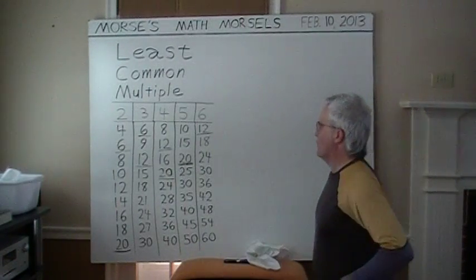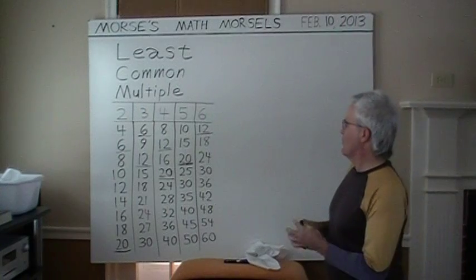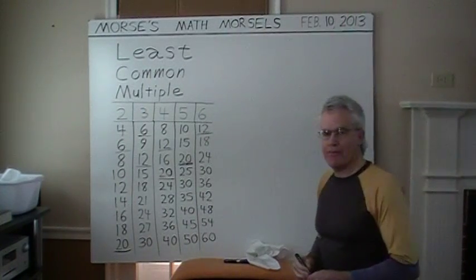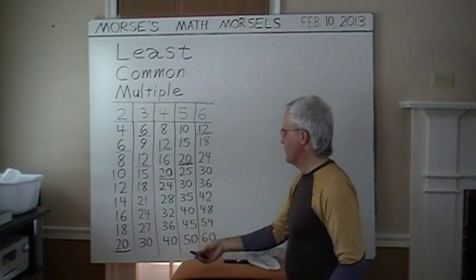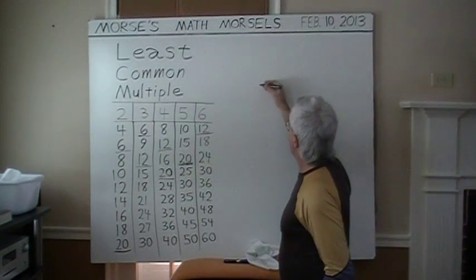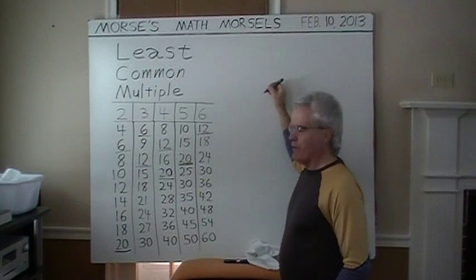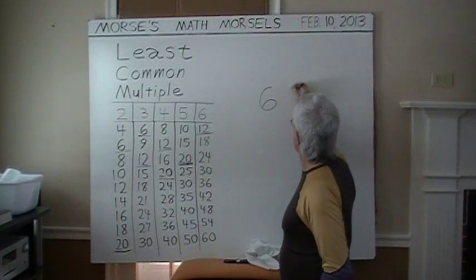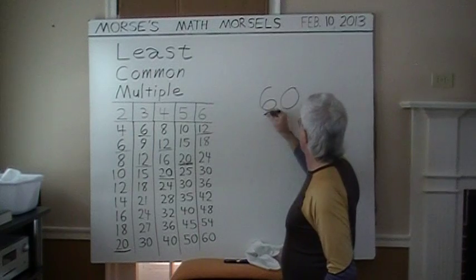Two, three, four, five, six. Least common multiple. There is a number that is in all five tables if you continue these listings far enough along. And that number will be sixty.